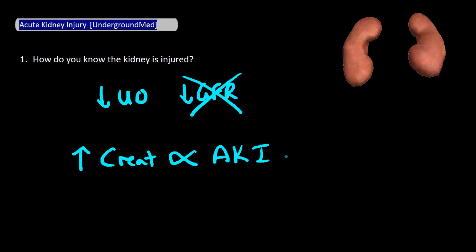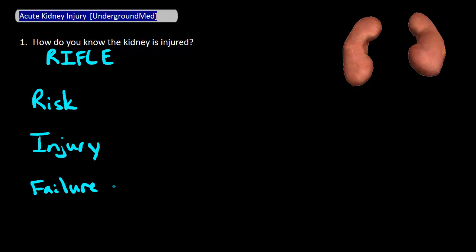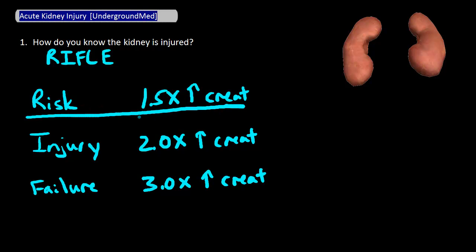There's a criteria that helps us define this. The RIFLE criteria is the one most people use. It defines three levels of kidney injury: risk, injury, and failure, based mostly on creatinine but also on GFR and urine output. You're in the at-risk category with at least a 1.5 times increase in creatinine from baseline, the injury level with a 2 times increase, and the failure category with at least a 3 times increase. Even if you're at the at-risk category only, you still technically have AKI.